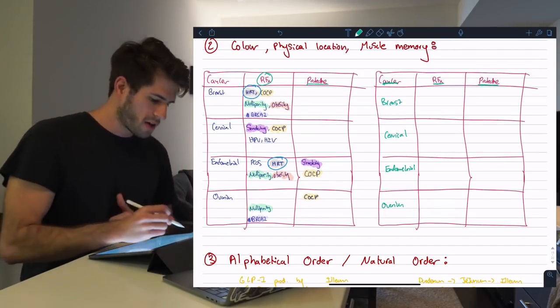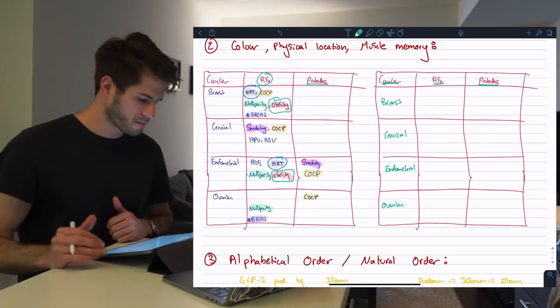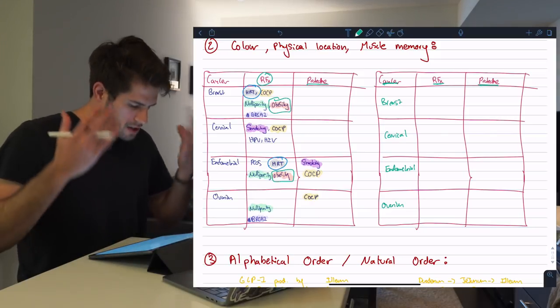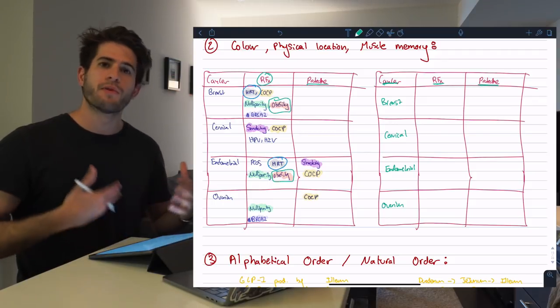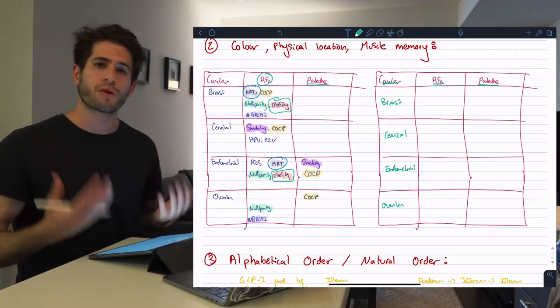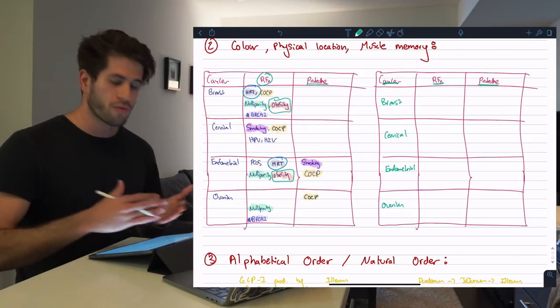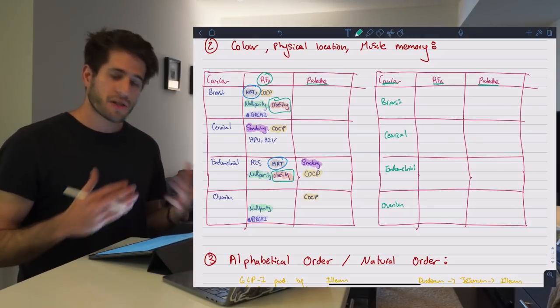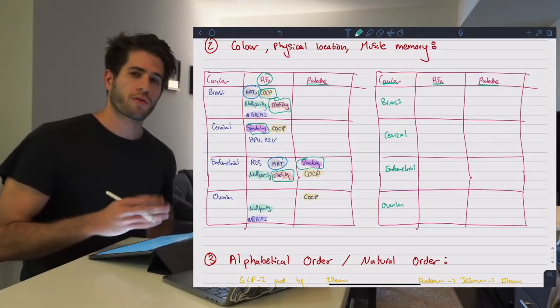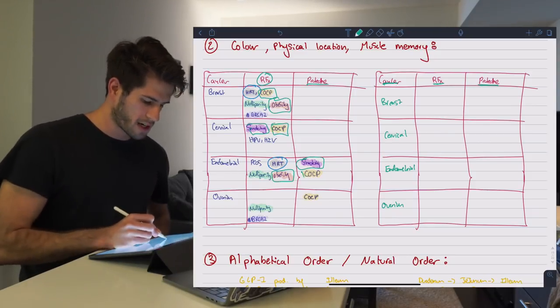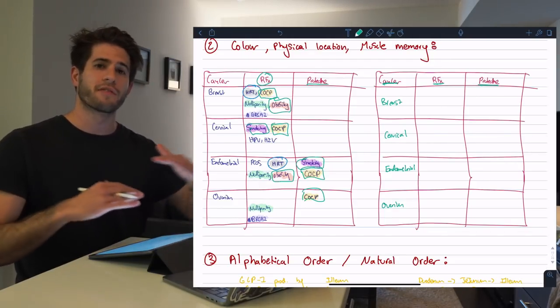After that I used colors to remember where the different risk factors were within that table. You'll see I've colored obesity with an orange highlighter here and obesity again in an orange highlighter down here. So now when I look at this table I start to remember that orange color is in the first row and in the third row. When I look at this table more and more that color coordination becomes more apparent and easier to remember. Because colors are a lot simpler and easier to remember than the full words such as obesity. You can see smoking is in purple. COCP which is the combined oral contraceptive pill is in yellow and appears four times.